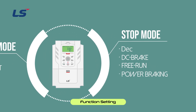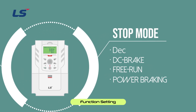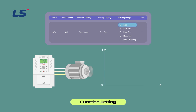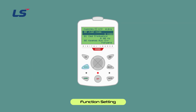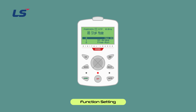Let's learn about stopping method settings. The DEC stop method is a general deceleration stop method. If there is no separate function selection, it decelerates to 0 Hz and then stops depending on the deceleration time. You can set the stop method by pressing the Enter key in ADV8 stop mode. Use the direction keys to move to 0 DEC and press the Enter key to complete the setting.